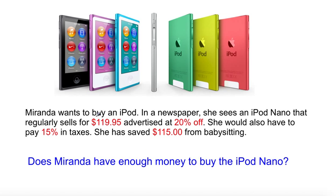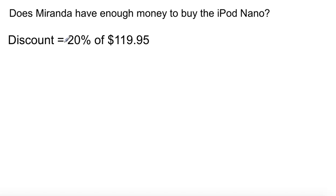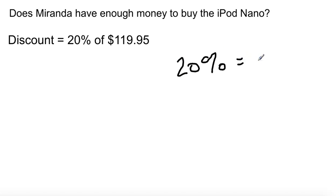We need to figure out the discount and then how much the discounted price will be with 15% in taxes. Feel free to copy this down or follow along and pause whenever you need to. The price is $119.95 and the discount is 20%. 20% in the form of a decimal equals 0.2.